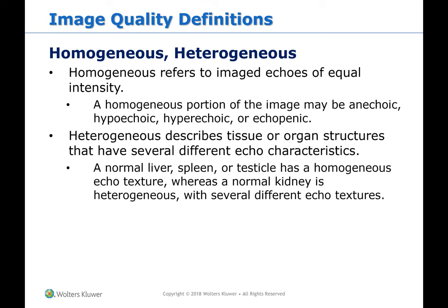Homogeneous refers to an image with echoes of equal intensity — it can be anechoic, hypoechoic, hyperechoic, or echopenic, but it's the same throughout. A healthy liver is homogeneous — the same gray field throughout, very smooth. Heterogeneous is more complex with different echoes. A kidney is heterogeneous: it has pyramids that are more anechoic, a medulla that is more echogenic, and a cortex that is more hypoechoic — all different textures within one structure.